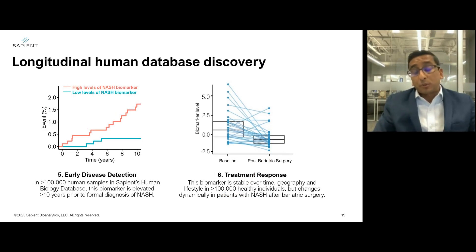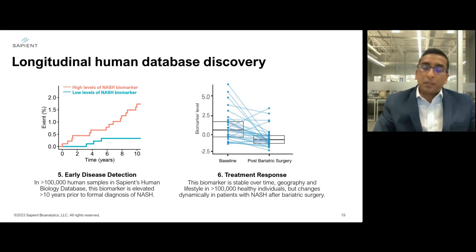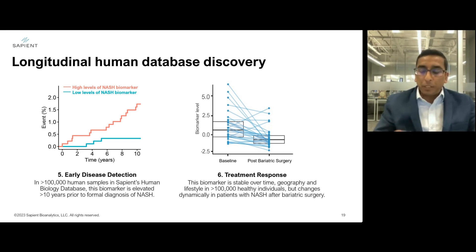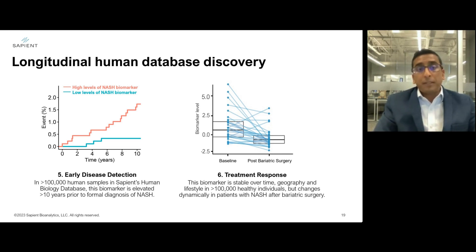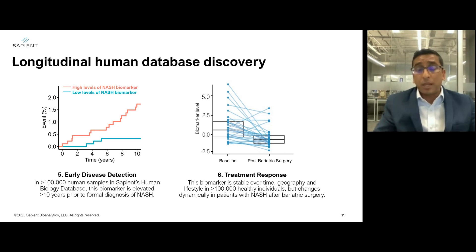Examining this marker across more than 100,000 individuals in our human biological database, we can ask how early in the disease process the biomarker is altered. We find that this marker is elevated in individuals who ultimately develop NASH up to 10 years in advance of formal clinical diagnosis. Looking at the plot on the left, individuals with high levels of this marker — matched for age, gender, BMI, demographic features, glucose levels, triglyceride levels, etc. — have a five-fold increase in developing NASH over the subsequent decade.